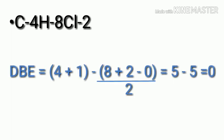For C4H8Cl2, the double bond equivalent value is: (2×4 + 2 - 8 + 2 - 0) / 2 = (8 + 2 - 8 + 2) / 2 = 4/2... wait: (5 - 5) = 0. DBE is 0, meaning there is no ring and no double bond. This is a completely saturated compound with maximum hydrogens.